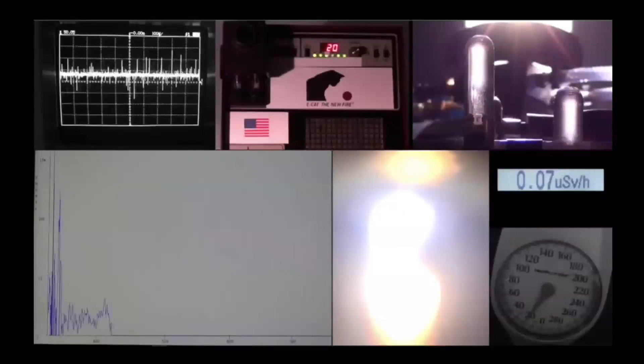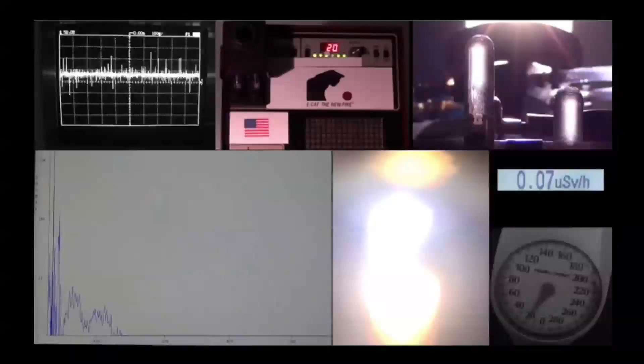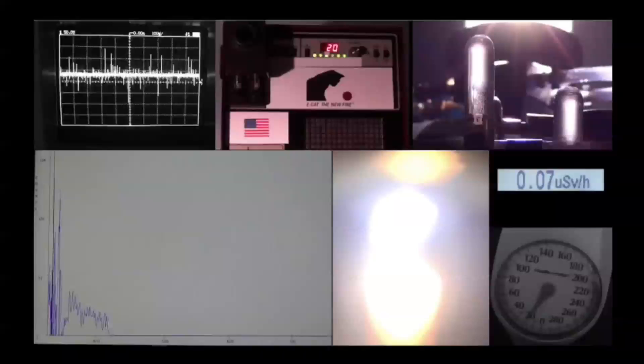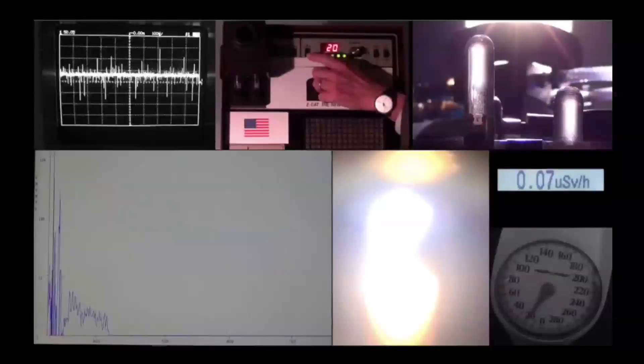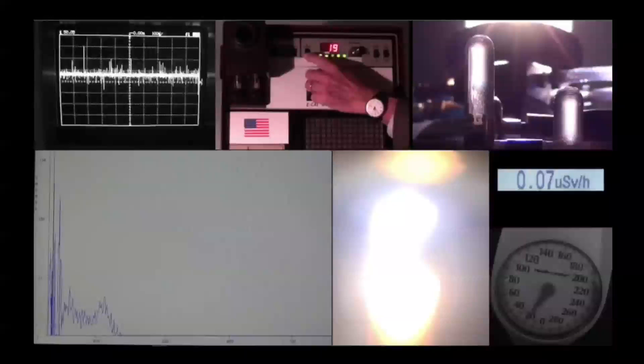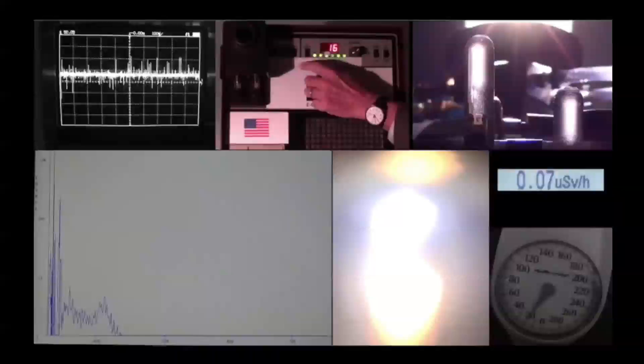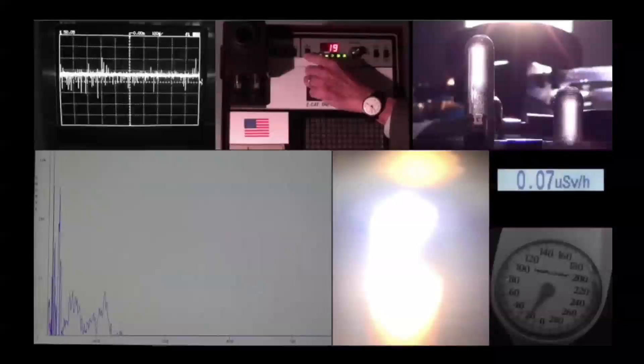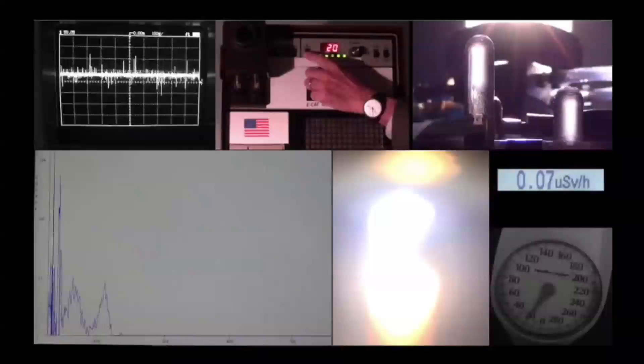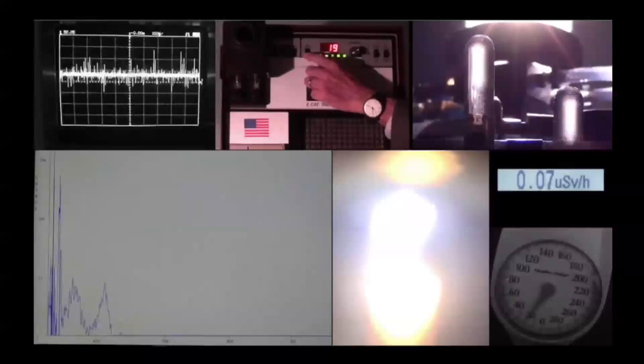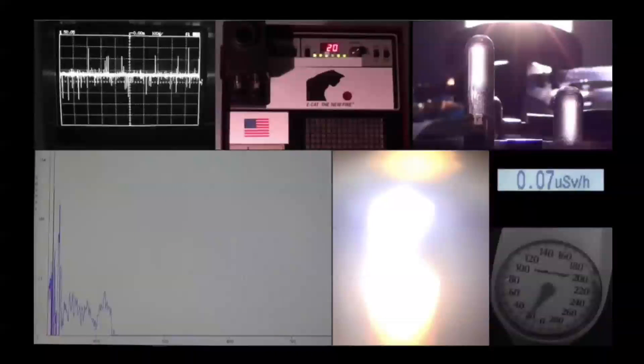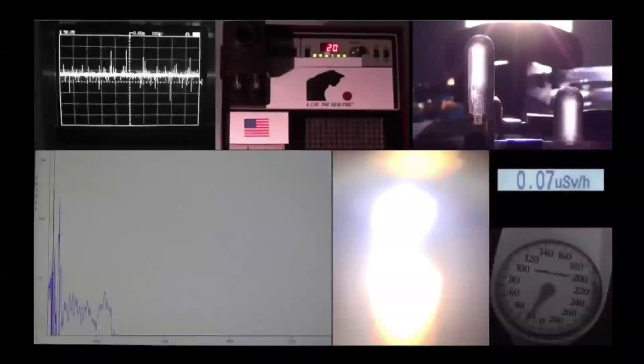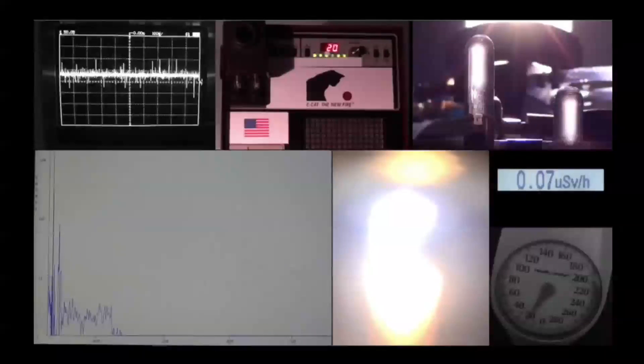View number 6 is all the way on the right in the middle. This is the measurement gauge of the micro Sievert per hour. It detects ionizing radiations. The value during the test ranged from 0.06 to 0.12 micro Sievert per hour. These values are well below the limits of danger.